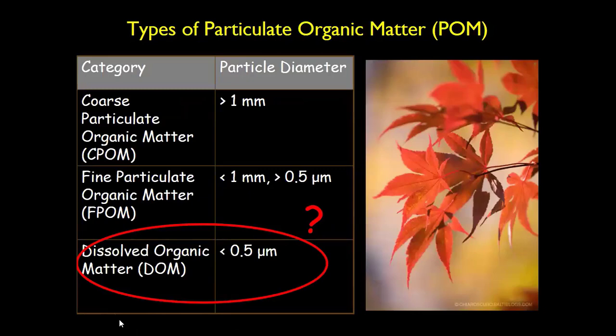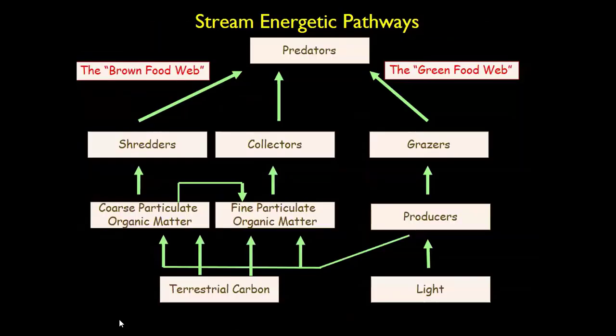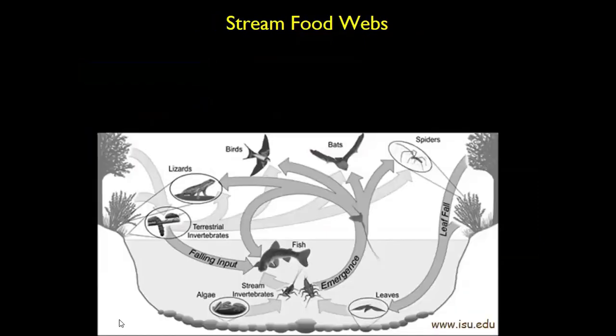So we're talking about DOM — it's stuff smaller than half a micron. Just to review, we've got these different pathways of energy: the green food web, our autochthonous pathway, and allochthonous over here. We've talked about CPOM and FPOM, and this is a real stream food web — one that actually takes into account that it's embedded in a terrestrial landscape. Especially up in the headwaters, the stuff coming in from the terrestrial ecosystem is going to be more important.